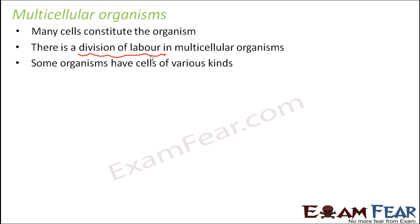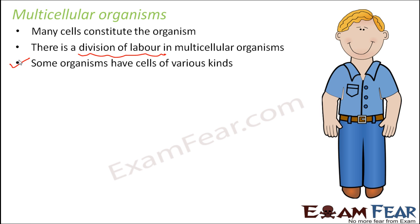Some organisms also have cells of various kinds. It is not necessary that all cells are identical to each other. For example, an elephant might have millions of cells, but they can be of different types — some cells are spherical, some are elongated. Because not all of them perform the same function, depending upon the function they perform, they might be of different shapes. If you look at human beings, our body has trillions of cells and they all perform different functions.